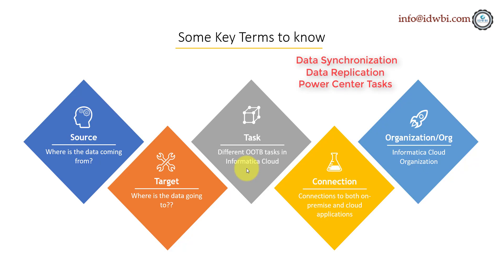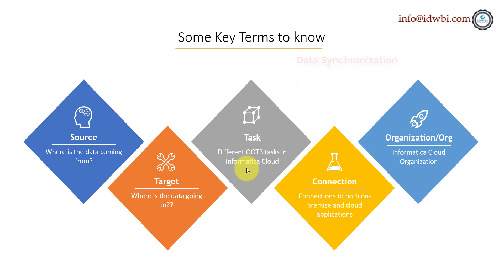The out-of-the-box tasks include: data synchronization, data replication, Power Center tasks — meaning if you have an existing Power Center workflow you can import it here — data masking, and mapping which you create yourself. Of these, data synchronization, data replication, Power Center tasks, and data masking are wizard-based, while mapping is the one which you create manually.